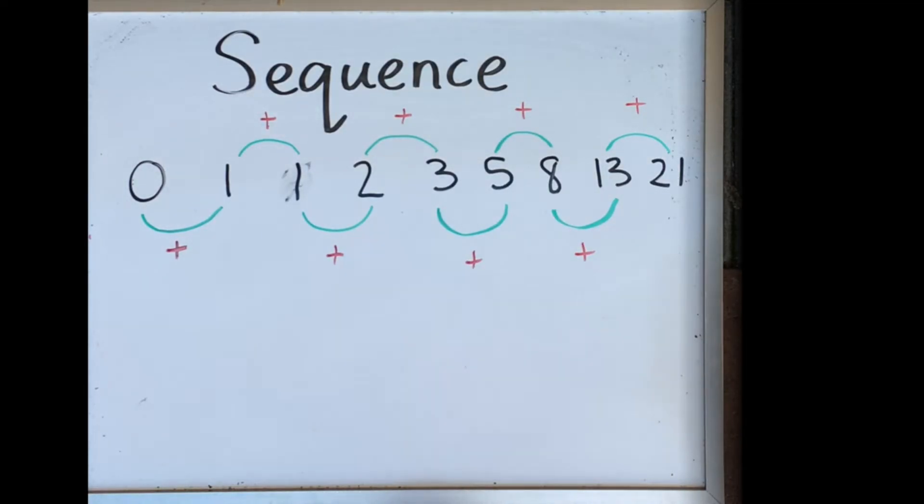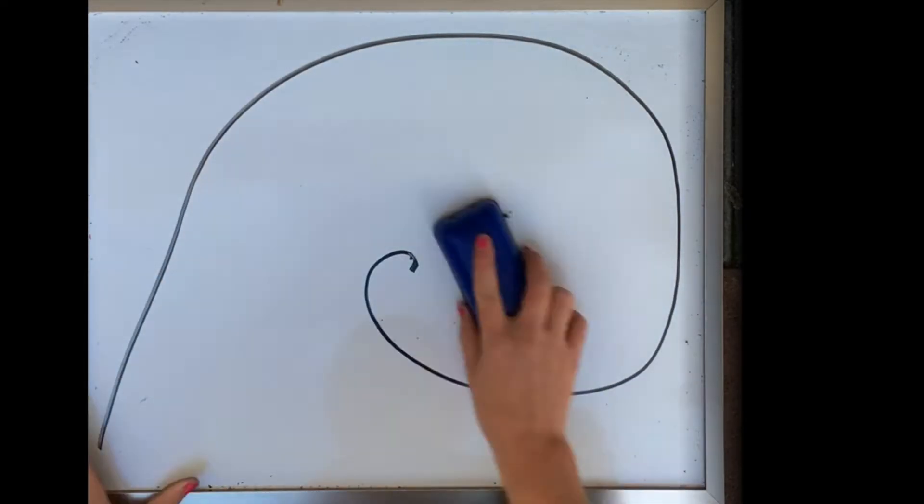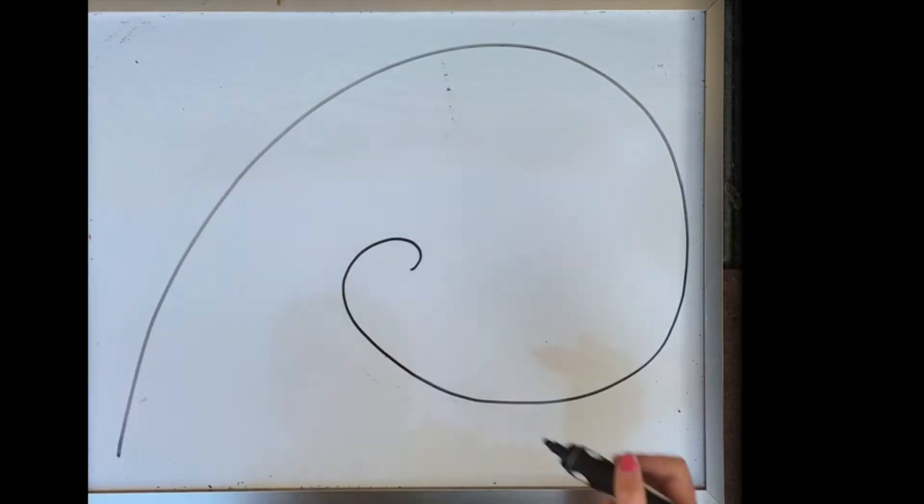This is used in filmmaking to make the shot look more appealing. The numbers when positioned correctly make a perfect spiral shape which is incorporated into filmmaking.